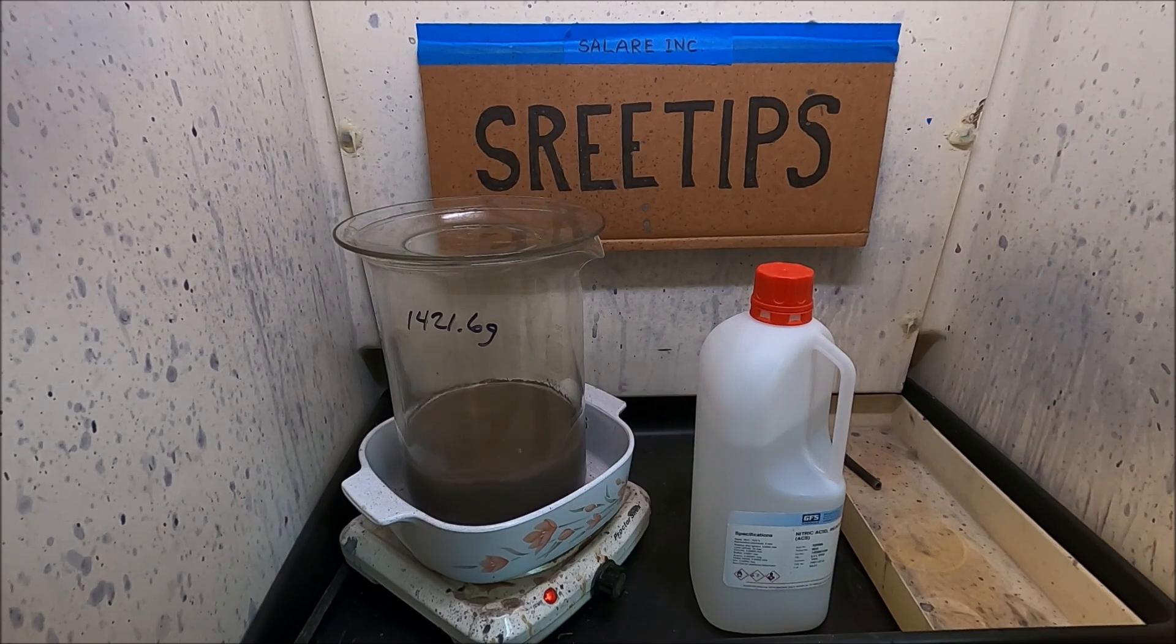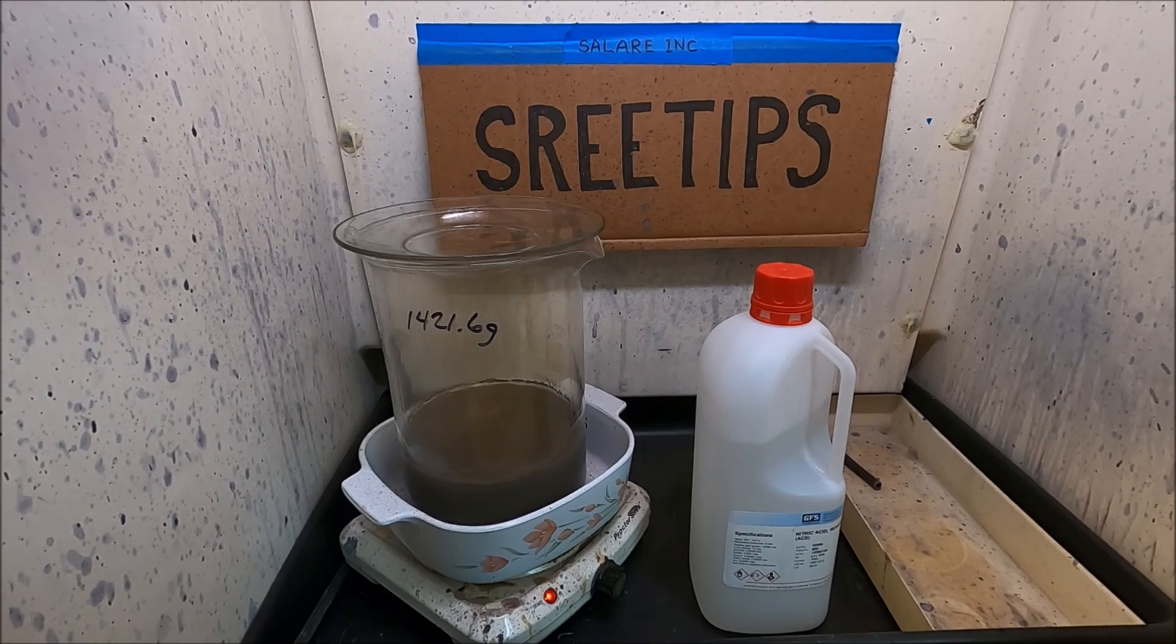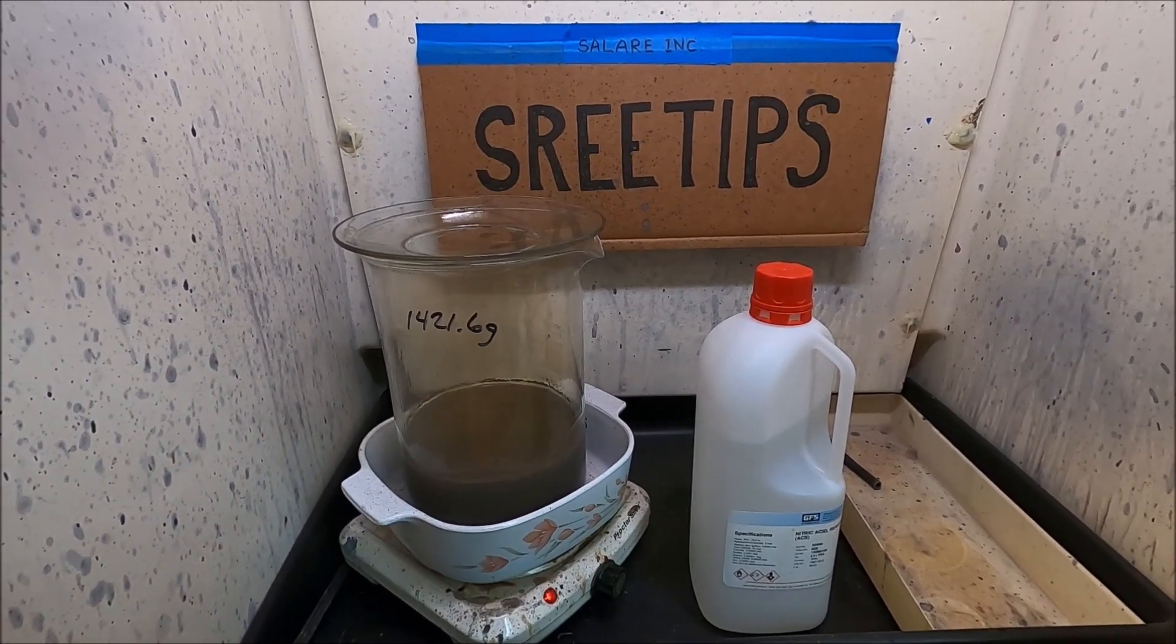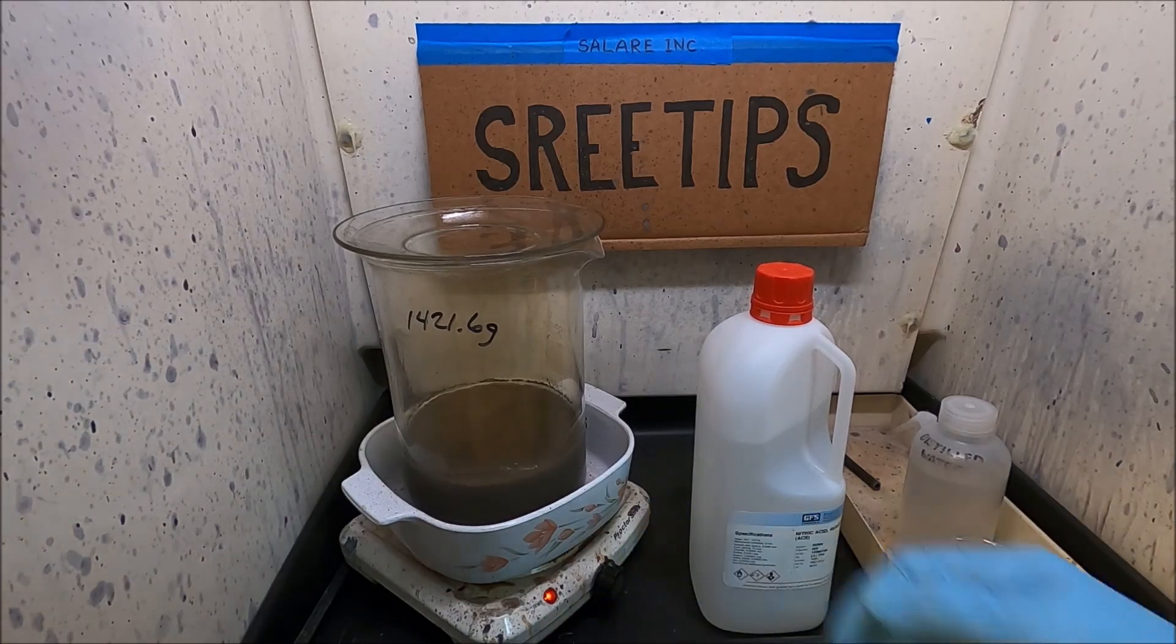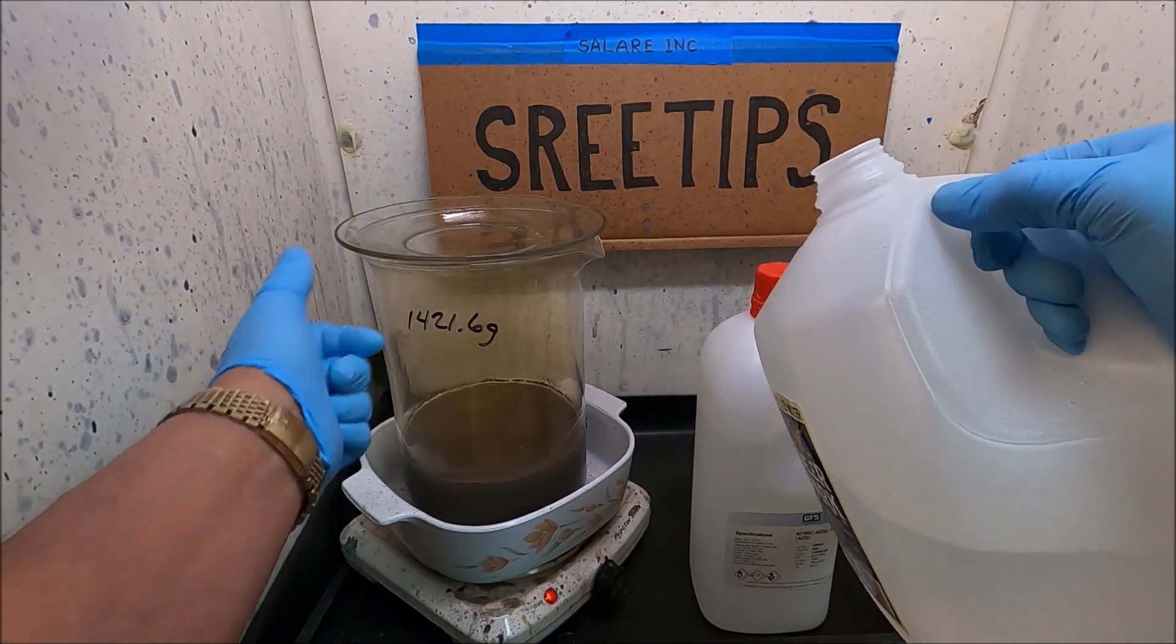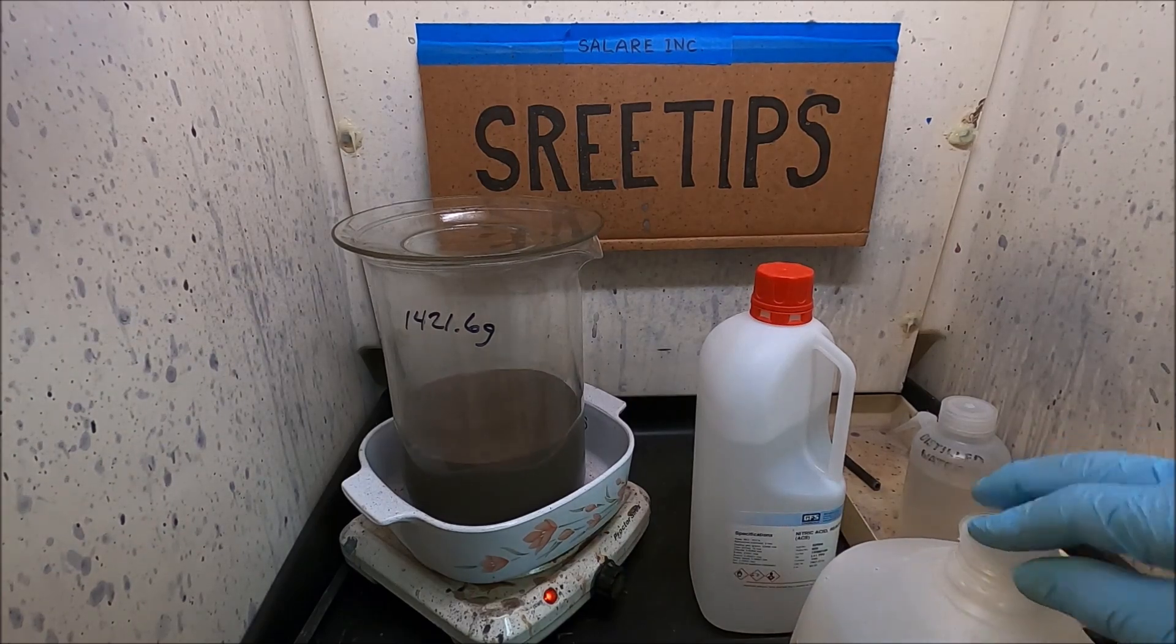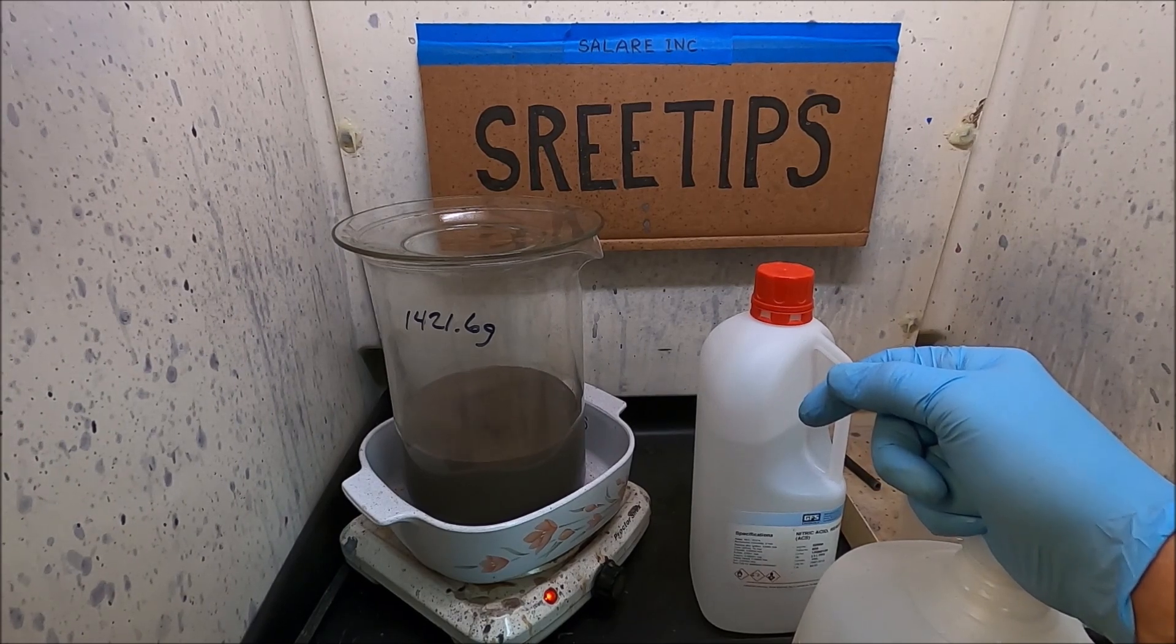OK, I think it's safe to conclude we've got all the stuff that's going to dissolve in nitric dissolved out of our material now. Go ahead and turn the heat off. I'm going to add some distilled water to dilute everything down in here, and we're going to let this settle out. And then we'll get the solution off our material, rinse it out real good, and then hit it with some aqua regia.